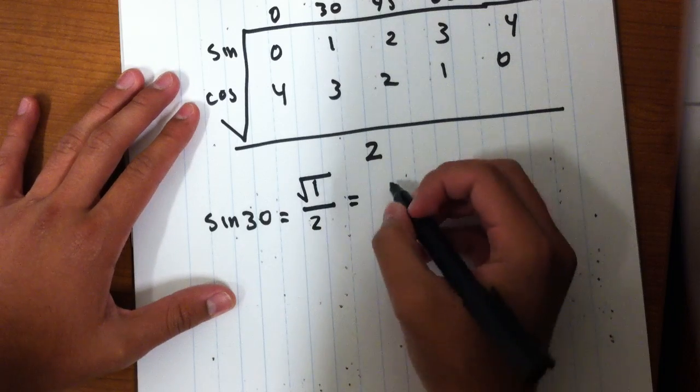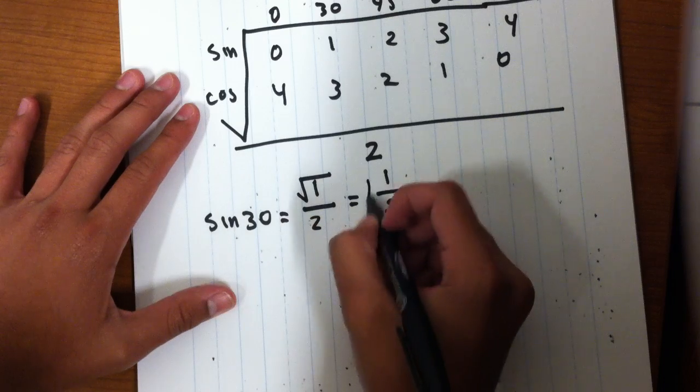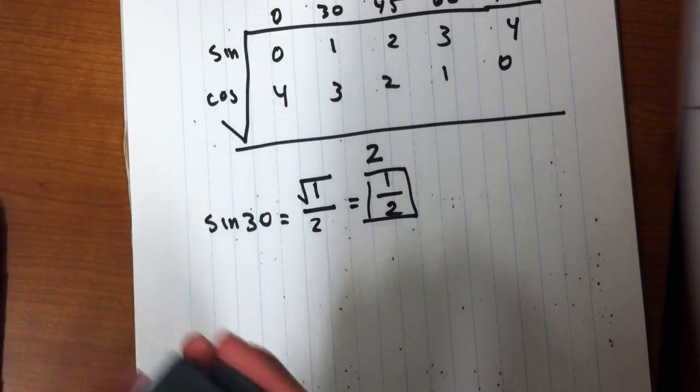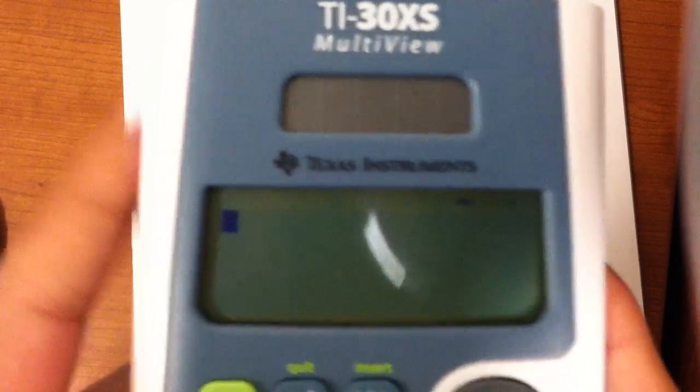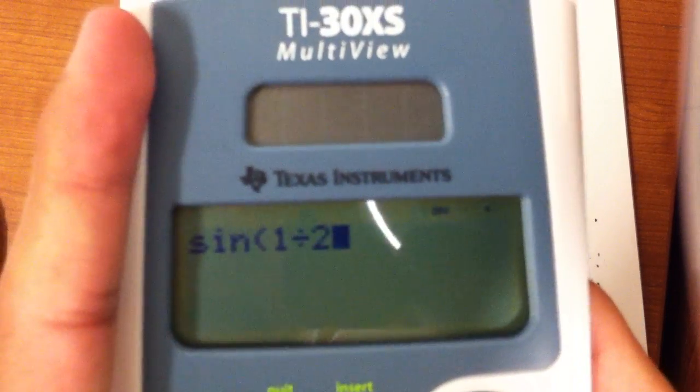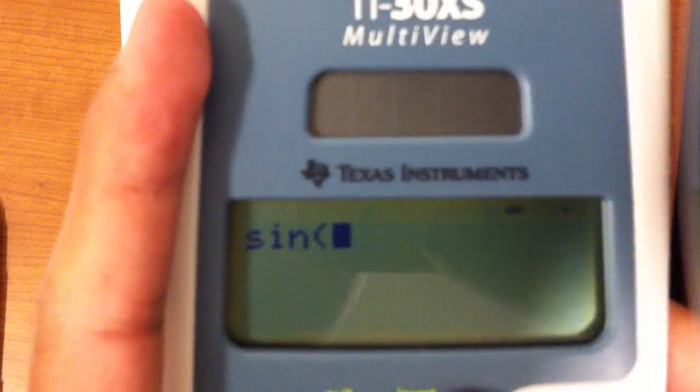So since square root of 1 is just 1, and divided by 2 is just 2, sine of 30 is going to equal 1 half. And we could check this on the calculator. Sine of 30 is going to equal 1 half.